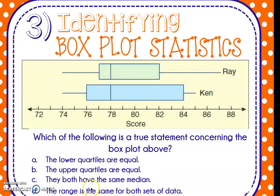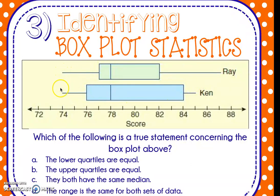Let's take a look at C — it says they both have the same median. The median for Ken is 78. The median for Ray is also 78. This one is true. Let's check D just to make sure: D says the range is the same for both sets of data. We can immediately tell that the range is not the same because Ray's upper extreme is different than Ken's. They both have the same lower extreme, but since the upper extremes differ, their range will be different. So the only correct answer is C — they have the same median of 78.